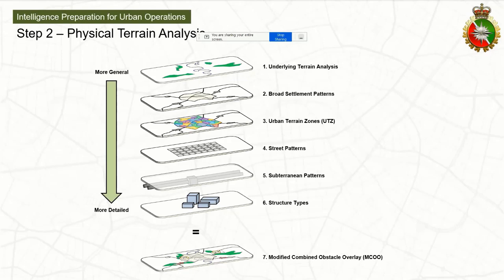After that, we take a look at street patterns because street patterns will have very important impacts on how forces can maneuver through a city. We look at that in tandem with subterranean patterns. One thing we need to wrap our minds around in an urban environment is that the subterranean and surface areas make up a contiguous operating environment, because you can move from subterranean to surface and back to develop movement corridors to infiltrate given areas.